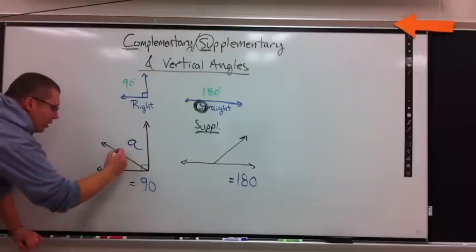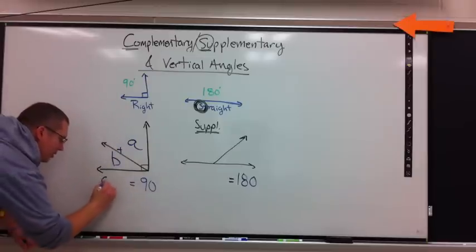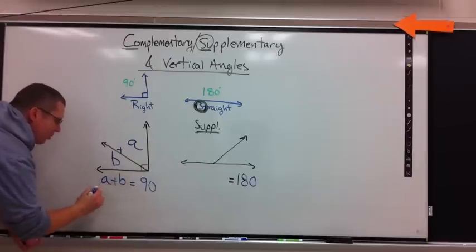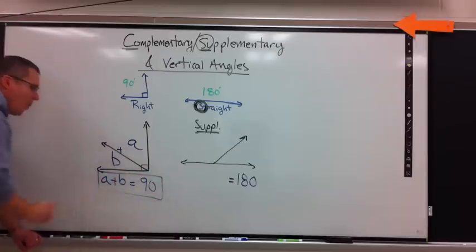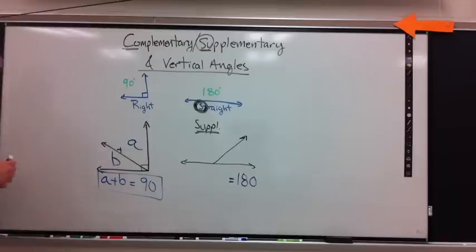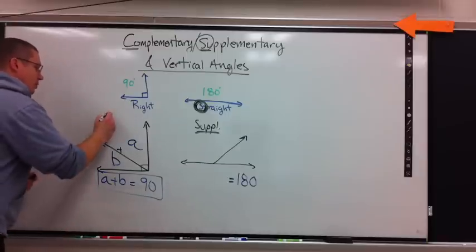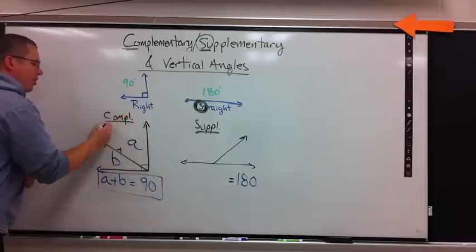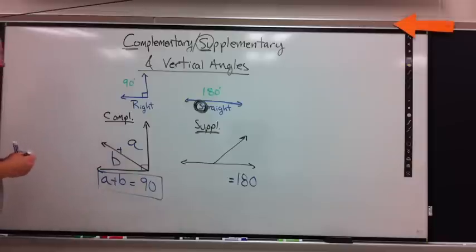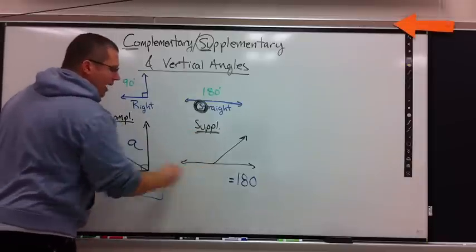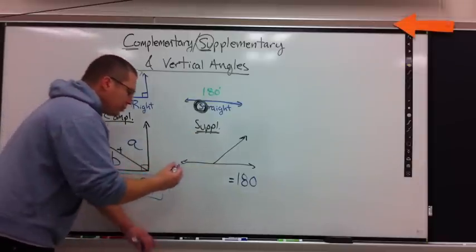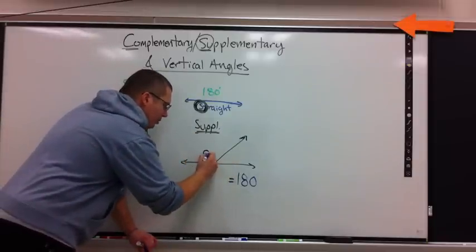Well, I should know that if I join them together with addition. So A plus B equals 90. And this is complementary. Complementary angles, two angles that add up to 90. Supplementary angles, two angles that add up to 180. Again, I don't know the two angles.